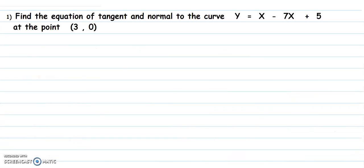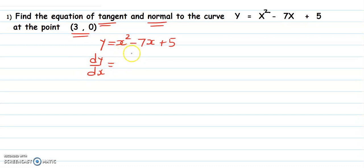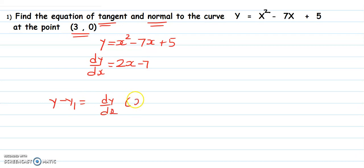Find the equation of a tangent and normal to the curve y equals x squared minus 7x plus 5 at the point (3, 0). The keyword is tangent and normal, and the point is given. Equation of curve: y equals x squared minus 7x plus 5. If we differentiate it, dy by dx equals 2x minus 7. Equation of tangent is y minus y1 equals dy by dx times x minus x1.